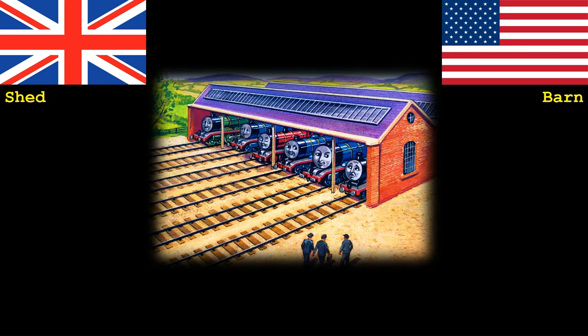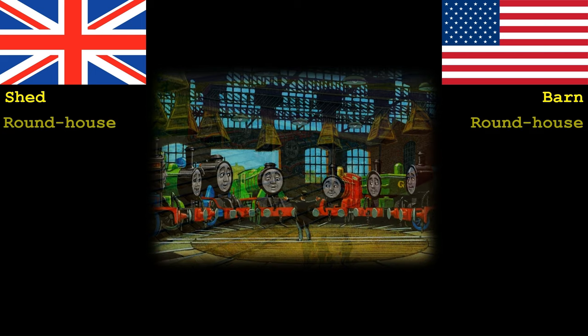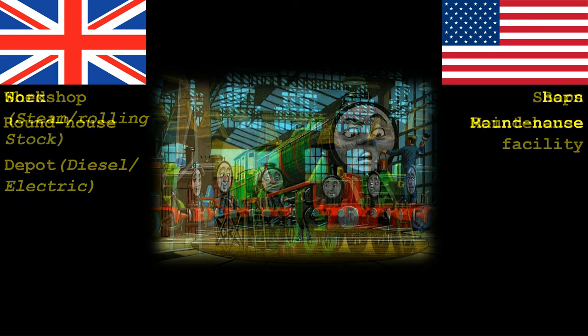It used to be quite common for engines or locomotives to be stored in a large wood or even brick building. These are known in the UK as sheds. In the US these are known as barns, however they are not particularly common as in America they seem to much prefer using a roundhouse. Engines, locos, rolling stock and cars require maintenance at some point, usually carried out at a facility known as a workshop. However in America this is often shortened to just shops, and they may also be known as a maintenance facility.